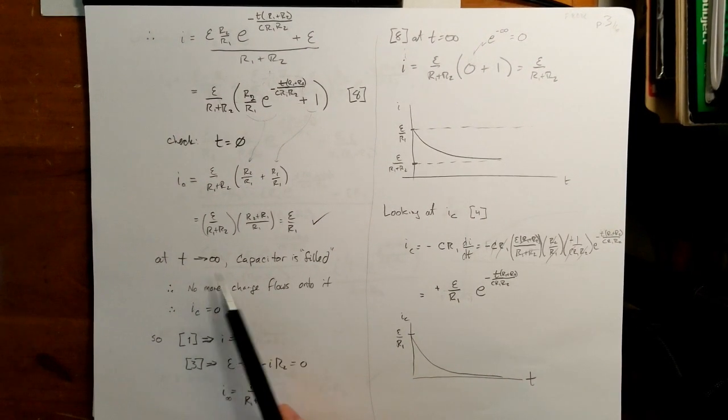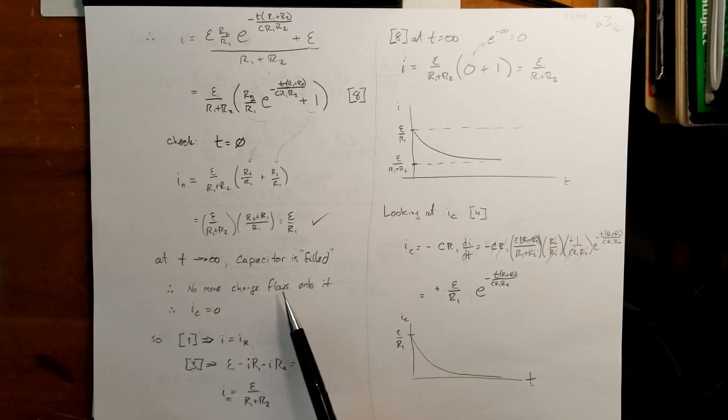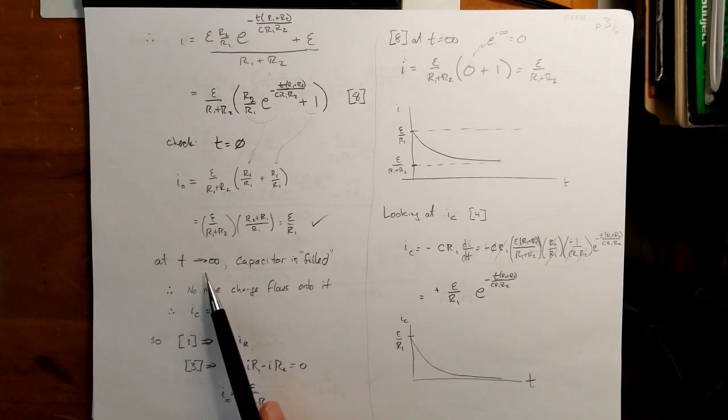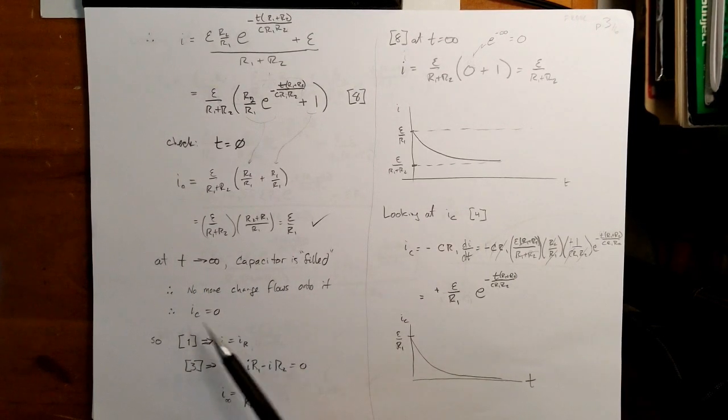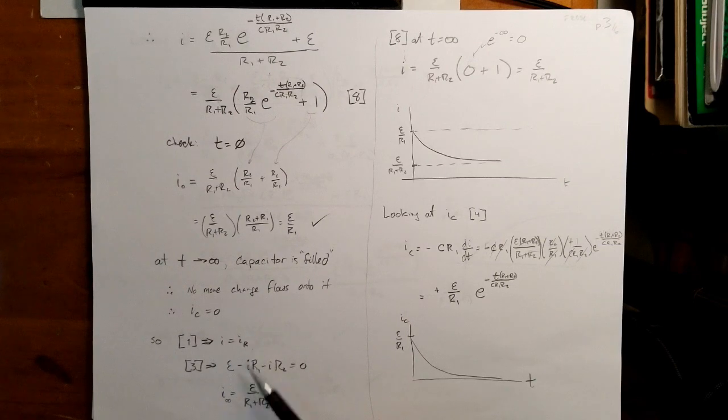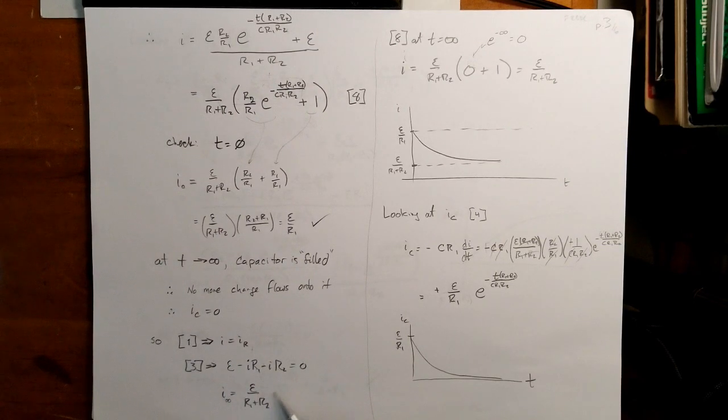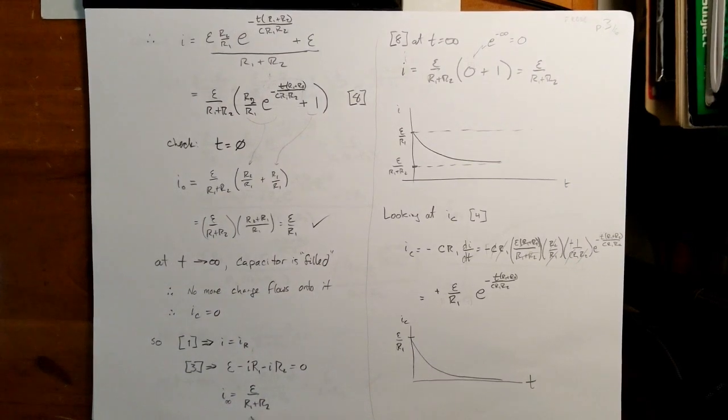And then let's take the next extreme with capacitor being filled, so no more charge flows to it. And if we let time go to infinity, the capacitor is filled, and therefore no charge flows onto it, and so the current flowing onto it is zero, and therefore the current and IR are the same, and so my equation becomes this, which is just the simple, if there were no capacitor, and I had two resistors in series.